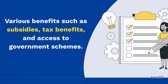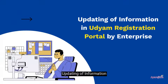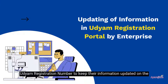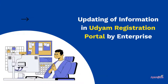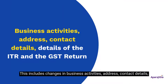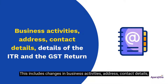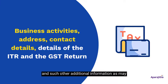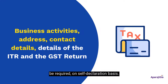Second, Updating of Information in Udyam Registration Portal by Enterprise. It is mandatory for MSMEs having a Udyam Registration Number to keep their information updated on the Udyam Registration Portal. This includes changes in business activities, address, contact details, details of the ITR and GST return for the previous financial year, and such other additional information as may be required, on a self-declaration basis.